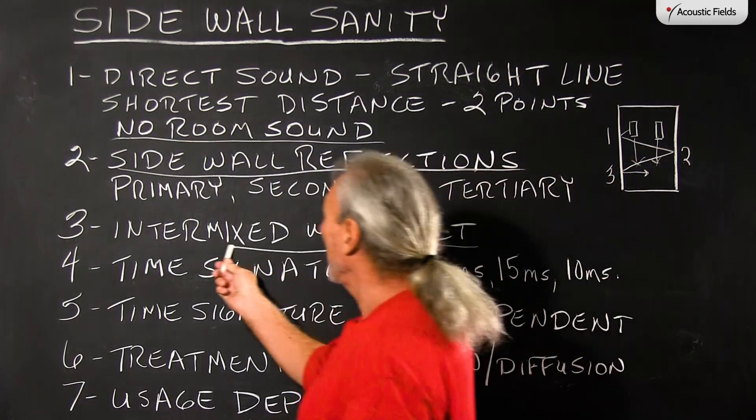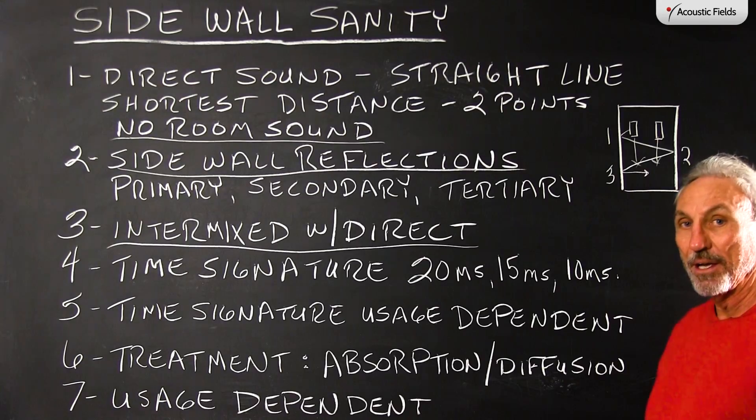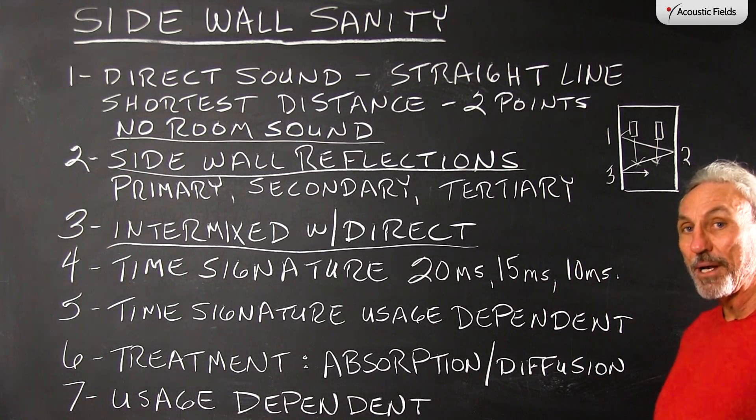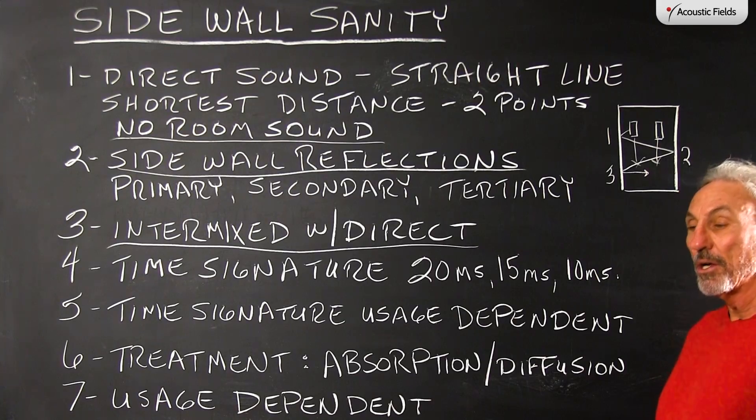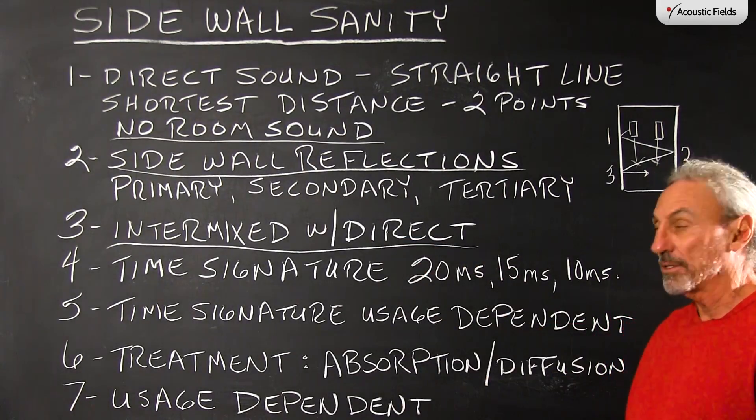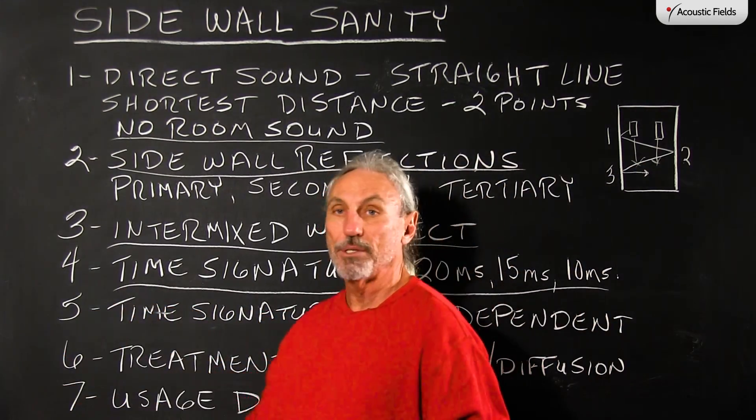Now the balancing act that we have to do is we have to intermix those reflected sounds with the direct sound. Now do we want to eliminate the reflected sound completely? No. We want to balance it with the direct from our loudspeakers. And here's where the time signature of the reflection comes into play.